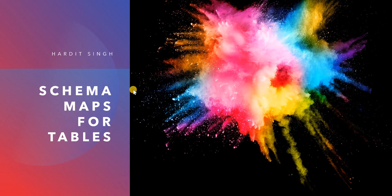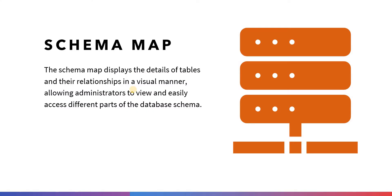First of all the definition: a schema map displays the details of tables and their relationships in a visual manner, allowing administrators to view and easily access different parts of the database schema. In other words, if we want to see how a particular table is related to other tables, it can be viewed through schema map easily in ServiceNow.